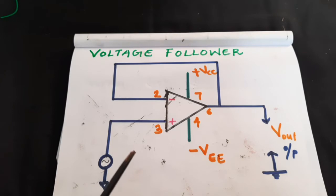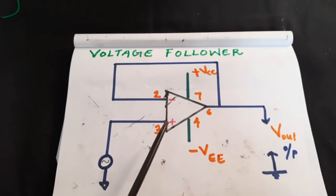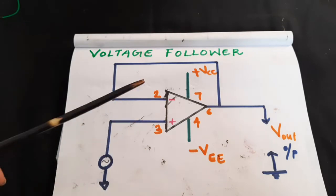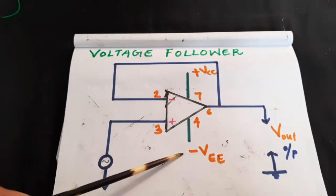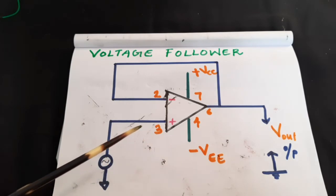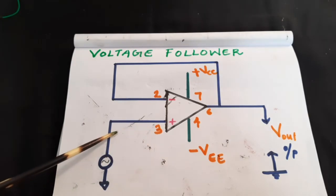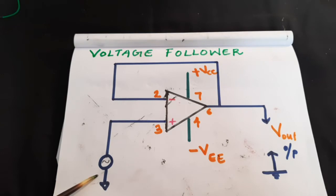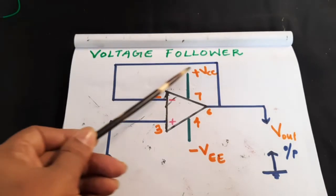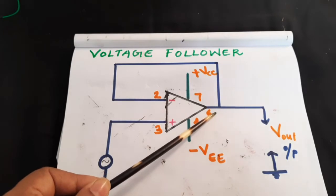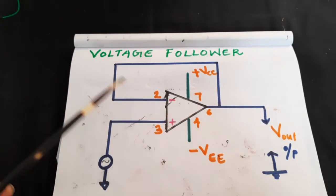Coming to the circuit of voltage follower using an IC741 op-amp. As usual, give the plus VCC and minus VCC here. You give your input in terminal 3. Pin 2 is directly connected to output pin 6.